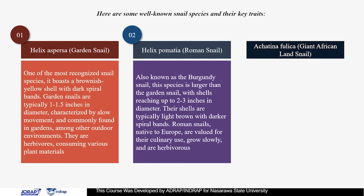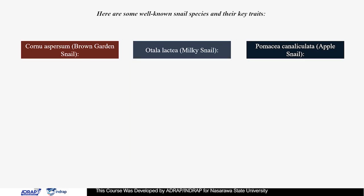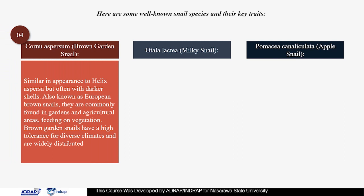Achatina fulica, the giant African land snail: among the largest land snails, they can grow shells up to 7 inches in length. They possess a conical shell with brownish stripes and are known in East Africa but have been introduced to various regions. They are generalist feeders, consuming a wide range of plants, and are known for rapid growth. Cornu aspersum, commonly called the brown garden snail, is similar in appearance to Helix aspersa but often with darker shells, also known as the European brown snail. They are commonly found in gardens and agricultural areas, feeding on vegetation, and have a high tolerance for diverse climates, making them widely distributed.